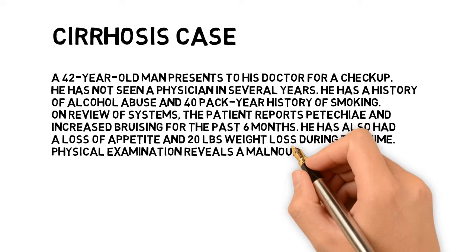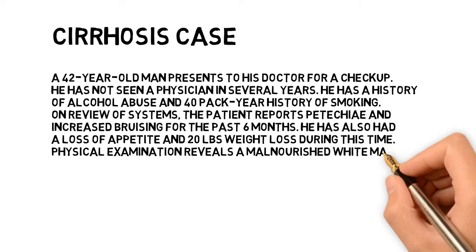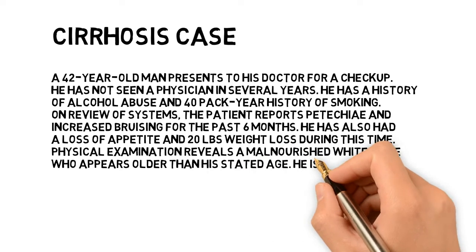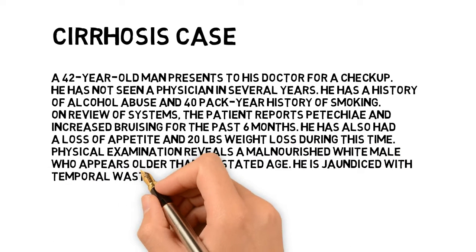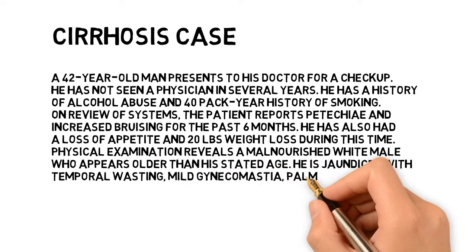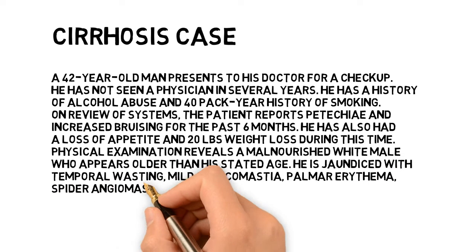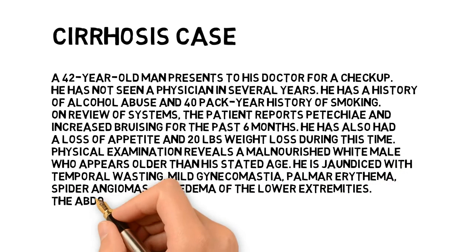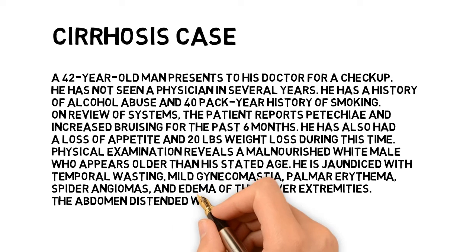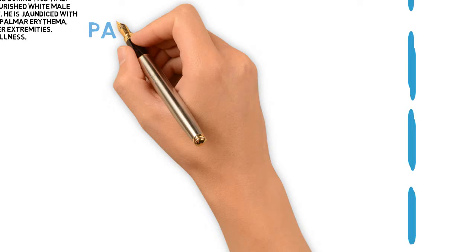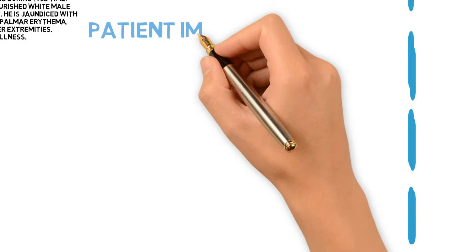Physical examination reveals a malnourished white male who appears older than his stated age. He is jaundiced with temporal wasting, mild gynecomastia, palmar erythema, spider angiomas, and edema of the lower extremities. The abdomen is distended with shifting dullness.